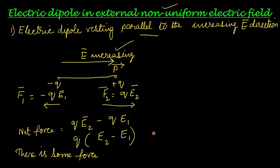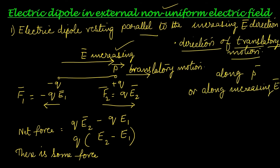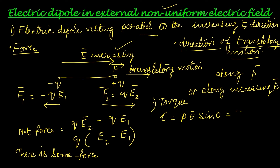The two ends of the dipole experience two different forces, so the net force is not zero. The effect on the dipole is translatory motion along the direction of the increasing electric field. This is much different from what happens in a uniform electric field. Regarding torque: τ = pE sinθ. Here θ = 0 because p and E are in the same direction, so sin 0 = 0 and torque is zero. The dipole does not rotate; it only experiences translatory motion because F1 ≠ F2.